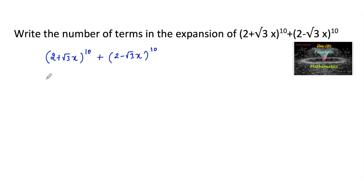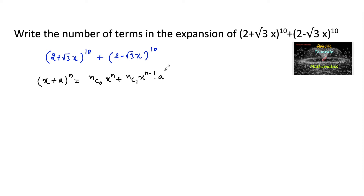We know that the binomial expansion (x + a)^n is equal to nC0·x^n + nC1·x^(n-1)·a^1 + nC2·x^(n-2)·a^2 and so on up to nCn·a^n.